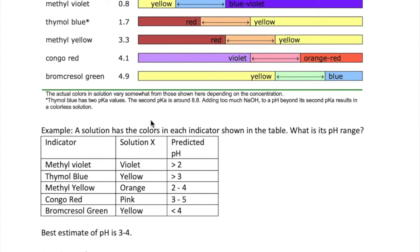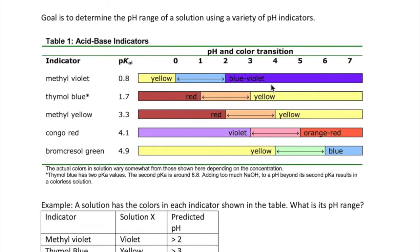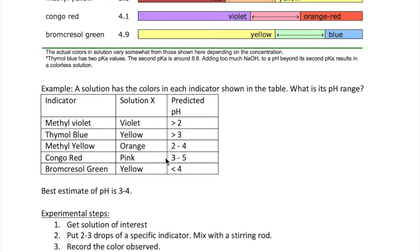So how do we get a pH range using this approach? An example is the following. Let's say you have a solution X whose pH range you want to determine. You will put each indicator and observe the color and then narrow down the pH. Here we see, for example, that solution X has a violet color in methyl violet, which indicates a pH of greater than 2 based on this table. If we repeat that same procedure for the other indicators, we can get these pH ranges for solution X and eventually narrow it down to a pH of between 3 and 4.